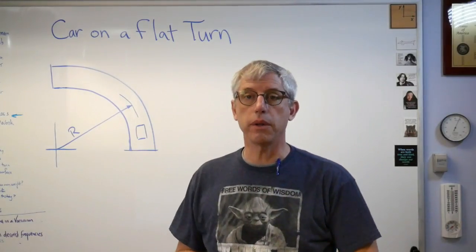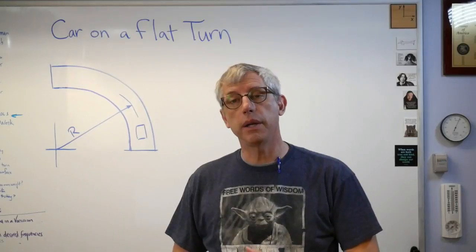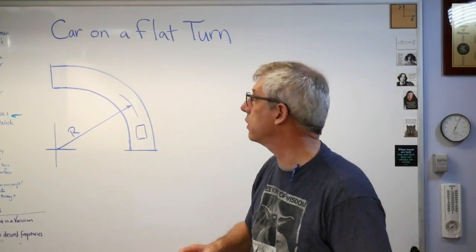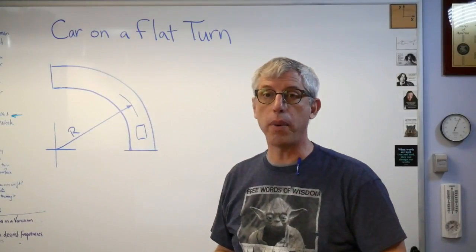Hey, buckaroos and buckarettes. Good to be back with you. Today I want to talk about a dynamics problem: how fast a car can go around a circular turn. Now, this is going to be a flat turn, so there's no bank.